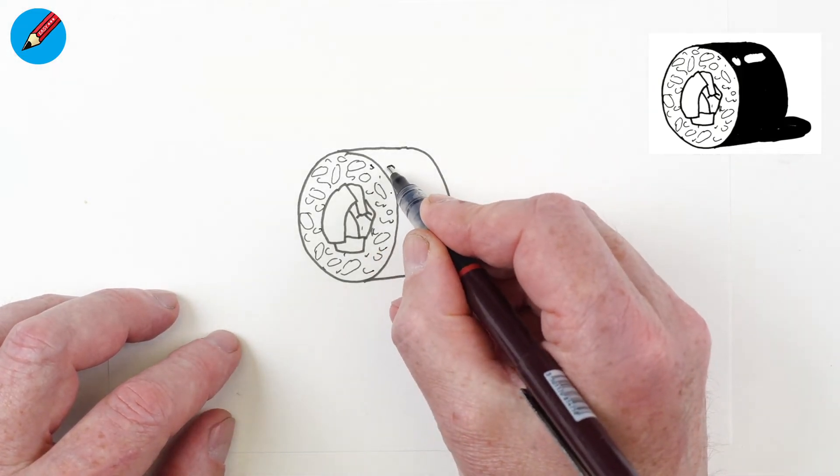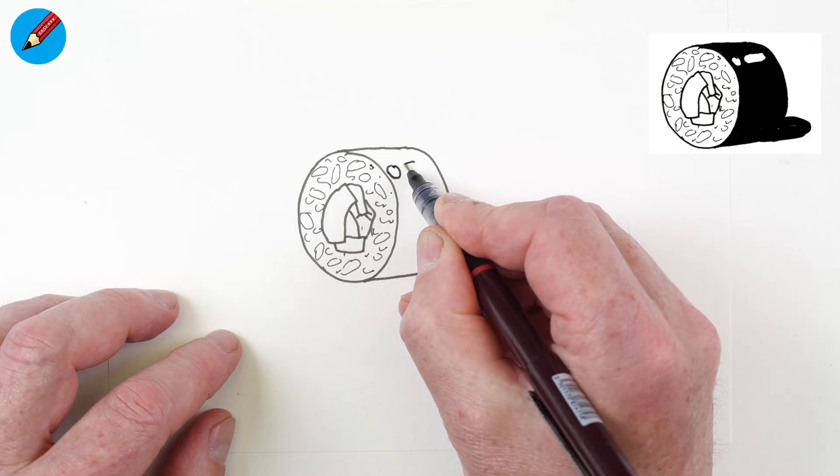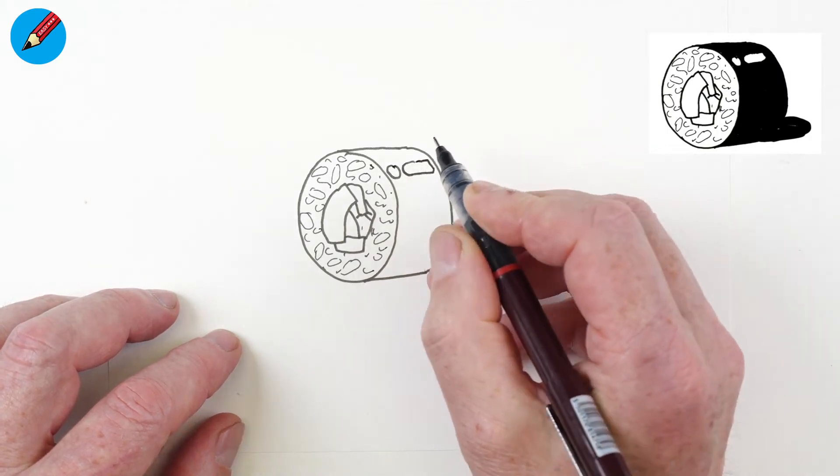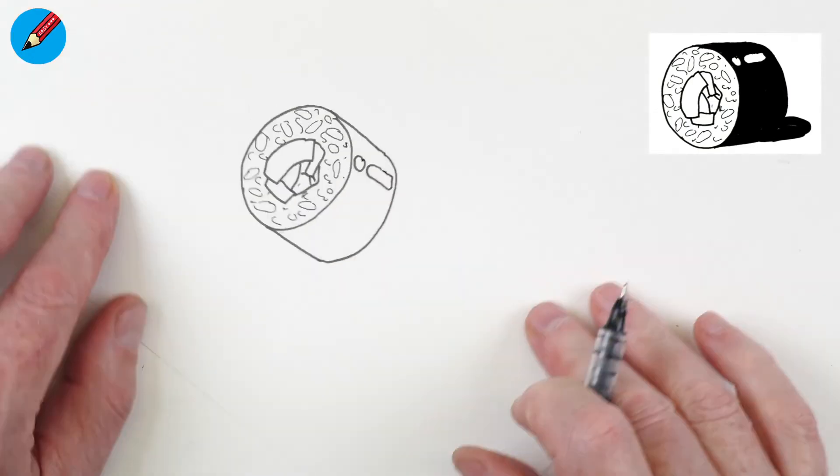And then let's put like a circle there and a caterpillar like that. It looks like an eye, doesn't it.